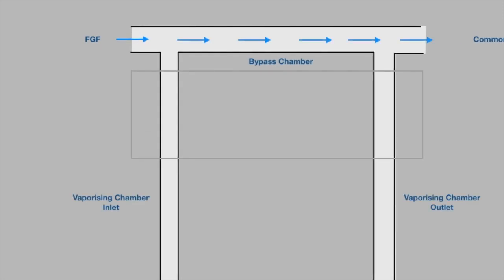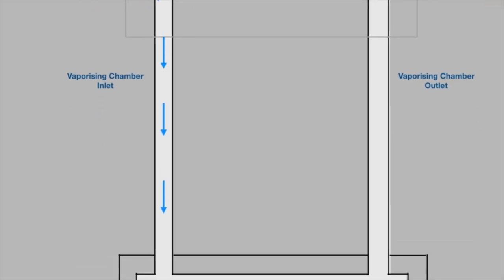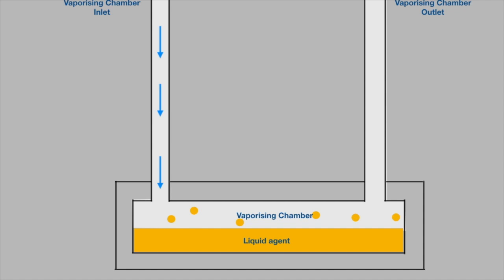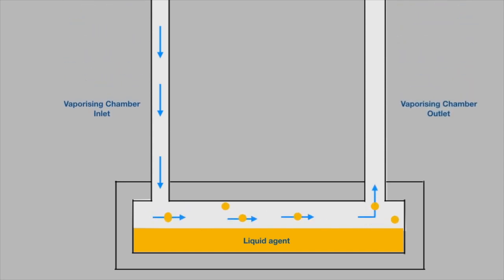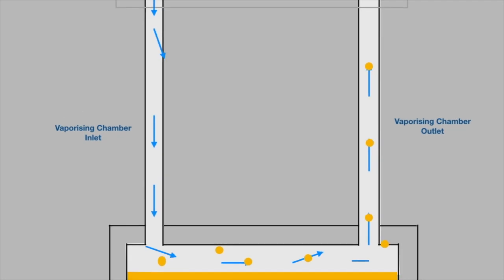See the fresh gas flow flowing through the bypass chamber. Once the dial is opened, a part of the fresh gas flow flows into the vaporizing chamber inlet. That part of the fresh gas flow reaches the vaporizing chamber and carries vapor molecules to the outlet through the vaporizing chamber outlet, where it joins the common gas outlet.